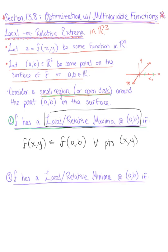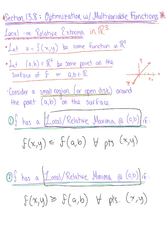Similarly, we have that f has a local or relative minima if the following holds true. If we find that f(x,y) is greater than or equal to the function evaluated at that point (a,b), for all points within that open disk, then our function is said to have a relative or local minima at that point (a,b).